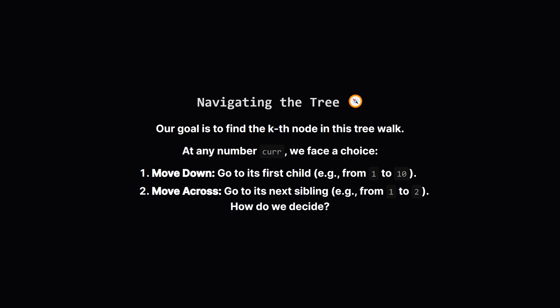We can think of ourselves as standing on a number. Let's call it our current number. From here we have two basic moves. We can either move down to its first child, like from 1 down to 10, or we can move across to its next sibling, like from 1 across to 2. The question is, how do we know which move to make to find our target?